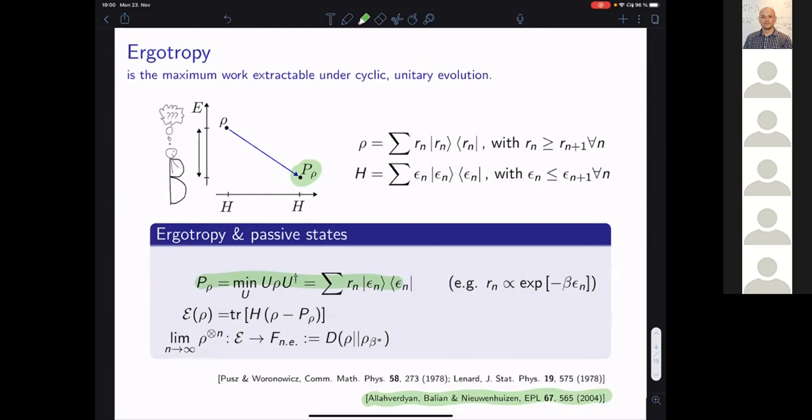So what do we do? We start in our state rho and we want to now extract as much work as we can by this cyclic unitary transformation. And so really what we want to do is we want to go to a state with as little energy as possible, so we can extract as much as possible. Such a state is called a passive state, a state from which no further work can be extracted in a unitary transformation.